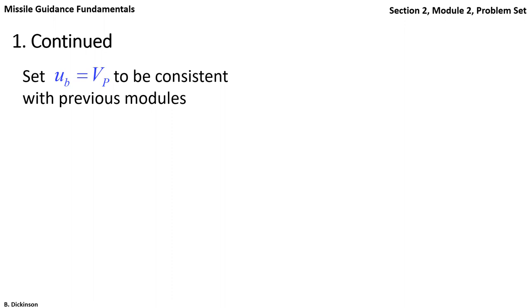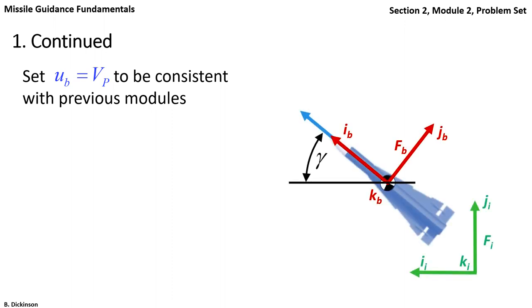To be consistent with previous modules, we're going to set u equal to capital V. It distinguishes itself from the vector because there's no arrow above the v. As we've developed, the cross product only has non-zero component in the body coordinate system j direction.